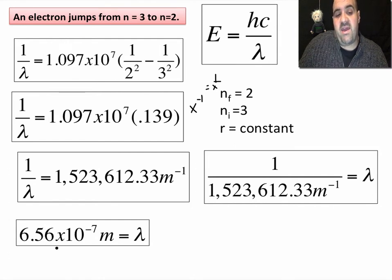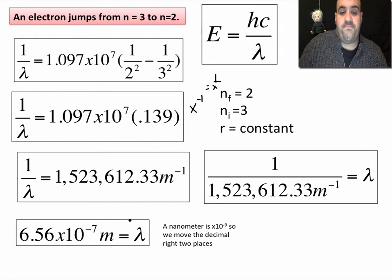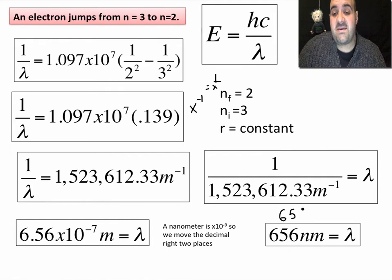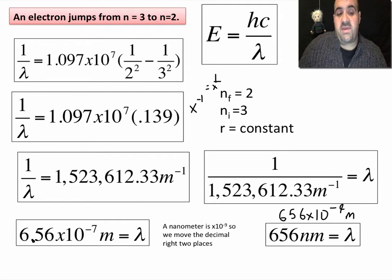I want this decimal to have to move left nine places, so I'm going to move it over two and make that to the negative ninth. This is going to be 656 nanometers or 656 times 10 to the negative ninth meters. What I did was I moved this decimal over two more places.